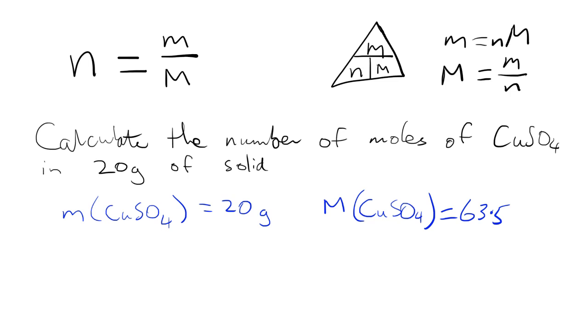Sulfur is 32.1, and then we also want to add 4 oxygen so that's going to be 4 times 16. If we add all those up we get a molar mass of 159.6 grams per mole. So remember that just means for every one mole of copper sulphate we have, we have 159.6 grams of it.